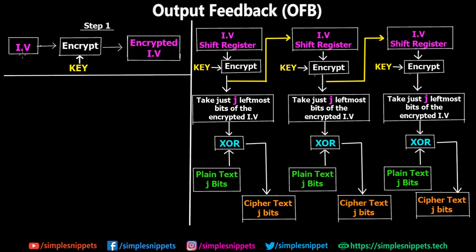Step number one: we take the initialization vector. If you don't know what an initialization vector is, it's just a random string of bits used to add more randomness to the encryption process. If the block size is defined as 64 bits, the IV is also 64 bits and the key is also 64 bits. The IV adds randomness so that along with the key, the encryption is more random and difficult to crack. In step one, we take this IV and encrypt it using the key — the private key encrypts the IV, not the plain text — and we get the encrypted IV.